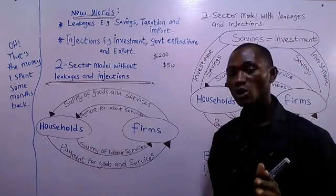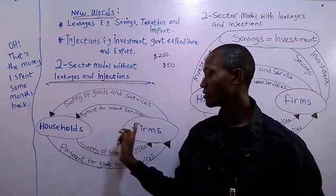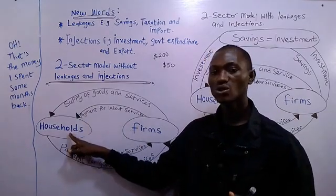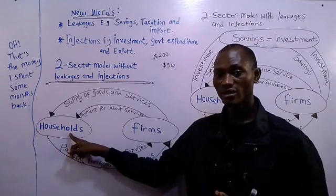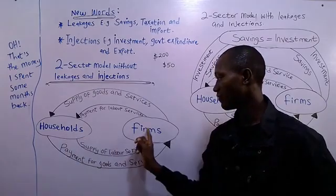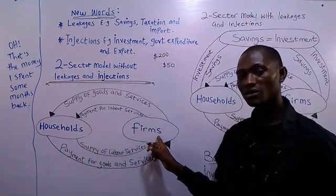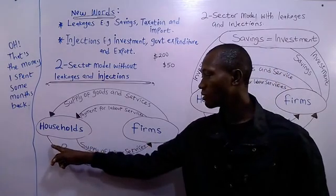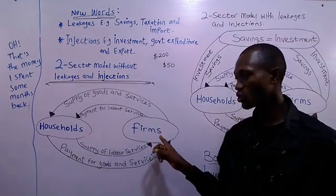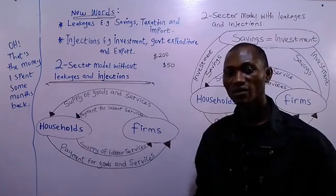Having supplied goods and services, the household will pay the business firm as payment for goods and services supplied. One thing you should know here is that the payment for labor services by the firm to the household represents the household's income. That's where the household gets its income. And how does the firm get its revenue? From the payments for goods and services by the household — that becomes the firm's revenue.